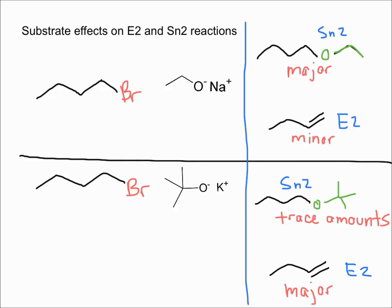When you have a big bulky base like this one, a substitution reaction will be really slow because the nucleophile is too hindered, so it can't really get to the carbon.